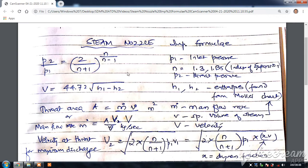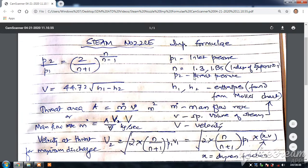P1 stands for inlet pressure and P2 stands for the throat pressure. So velocity V2, this exit velocity V2, is equal to 44.72 square root of h1 minus h2.